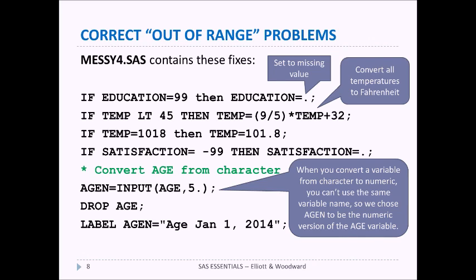And we also found out that the temperature stored as 1018 should have been 101.8. And satisfaction that negative 99 was an impossible value so we set that also to missing.